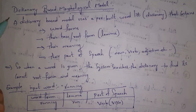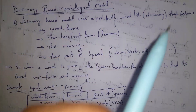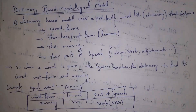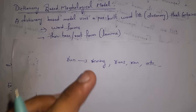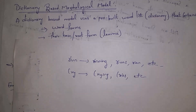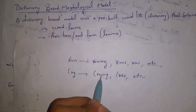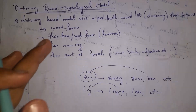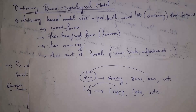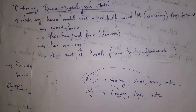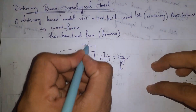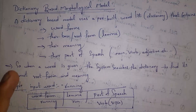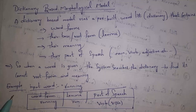A dictionary-based morphological model uses a pre-built word list called a dictionary that contains word forms. For example, word forms of 'run' include running, runs, ran; word forms of 'cry' include crying, cries. The dictionary also contains the base or root form — called a lemma — so for 'crying' and 'cries' the root is 'cry', and for 'running', 'runs', and 'ran' the root is 'run'. The dictionary also contains the meaning and parts of speech for each word.